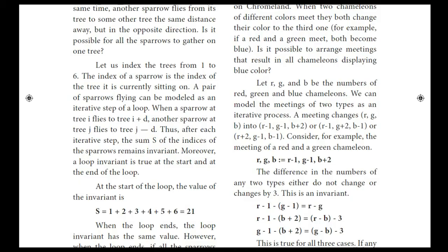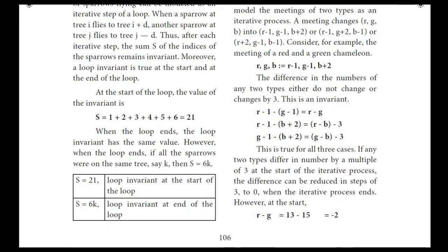The sparrow flying can be modeled as an iterative step of the loop. A sparrow flies to tree i plus d, while another flies in the opposite direction. After each iterative step, the sum S of the indices of all sparrows remains invariant. The loop invariant is true at the start and end of the loop.